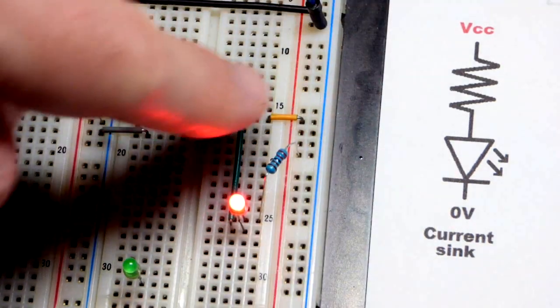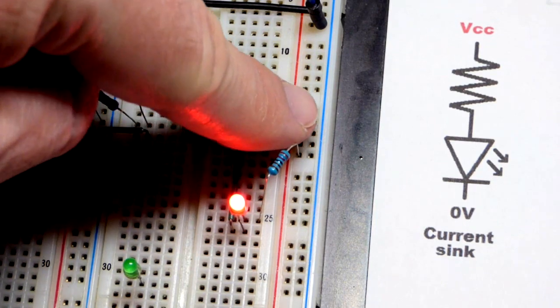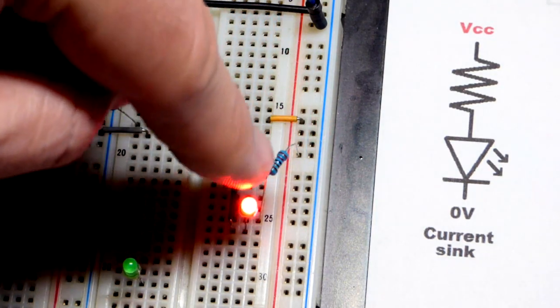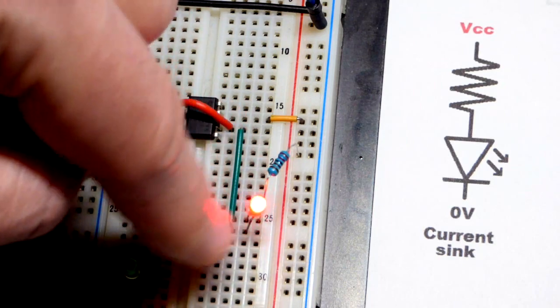We can take a 2.2 kilohm resistor, go to the positive rail, and it lights up.